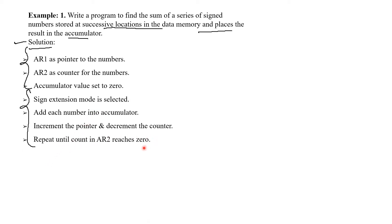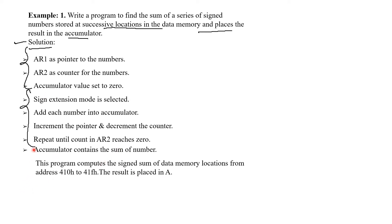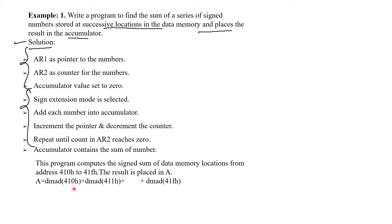Repeat until the count in AR2 reaches 0, because AR2 is a Counter Register, and the Accumulator contains the sum of all the numbers. This algorithm is used to compute the addition of signed numbers from data memory location 410 hexadecimal to 41F hexadecimal, and the result is placed in Accumulator A. That is: A = DMAD(410h) + DMAD(411h) + ... + DMAD(41Fh). The result is stored in Accumulator A.